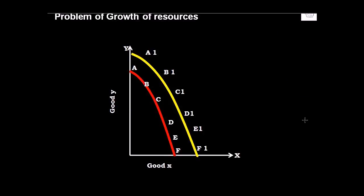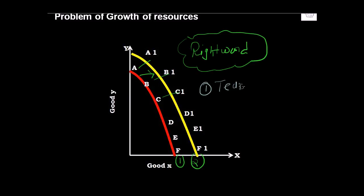The fourth problem that can be solved with the help of PPC is the problem of growth of resources. If you see your PPC moving rightward, with every combination moving from A to A1, B to B1, C to C1, your curve shifts from PPC1 to PPC2. This is a rightward shift in the PPC. Why would there be a rightward shift? The answer is simple: either your technology improves or you have new resources.